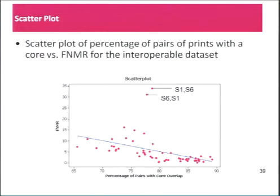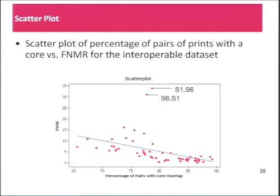We created a scatter plot of the percentage of pairs of prints with cores detected versus the false non-match rate for the interoperable data sets. We saw a trend where the higher the percentage of pairs of prints with the core detected, the lower the false non-match rate — a clear relation between consistency of placement and reduction of false non-match rates. However, there were two outlier points: data sets S6 and S1, and S1 and S6, which were clear outliers to this phenomenon.